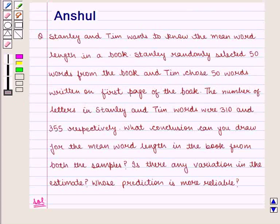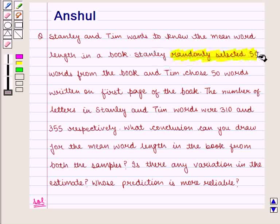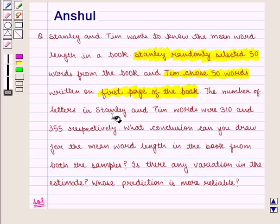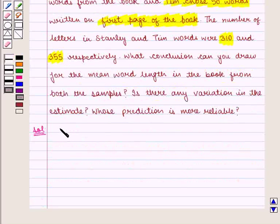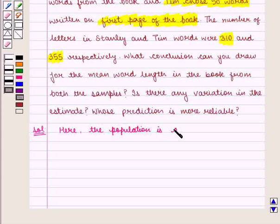In this question, we are given that Stanley and Tim each chose a 50-word sample from the book. Stanley randomly selected 50 words from the book and Tim chose 50 words written on the first page of the book. Also, the number of letters in Stanley and Tim's words were 310 and 355 respectively. Here, the population is all the words in the book.